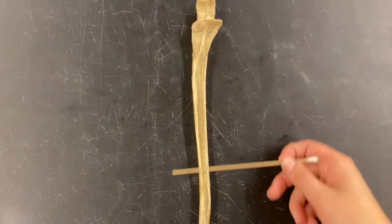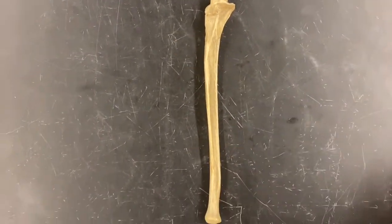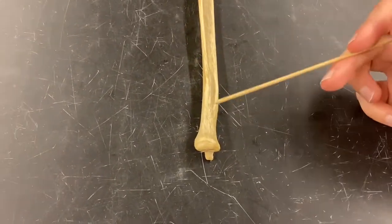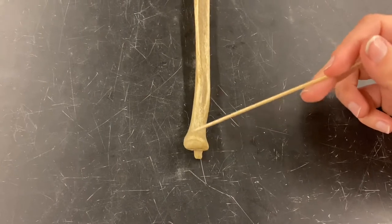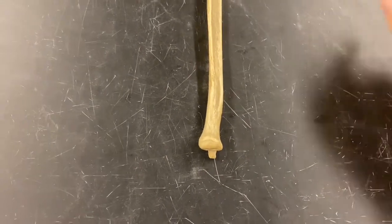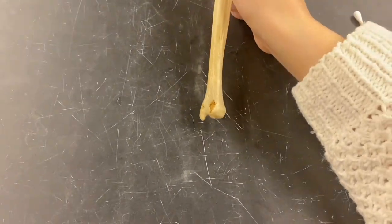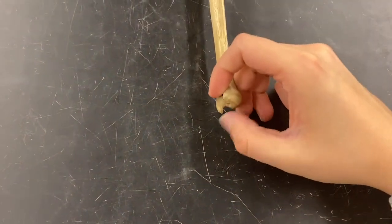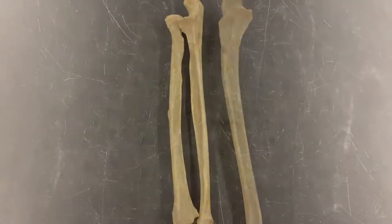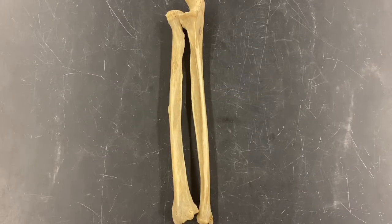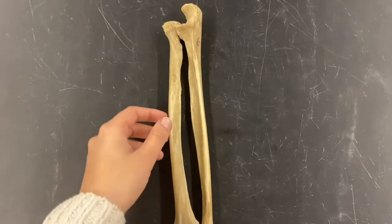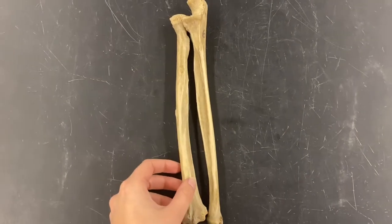This is the shaft of the bone, and the head of the ulna is actually going to be distal. This is the head of the ulna, and that little styloid-looking piece right there is the styloid process of the ulna.